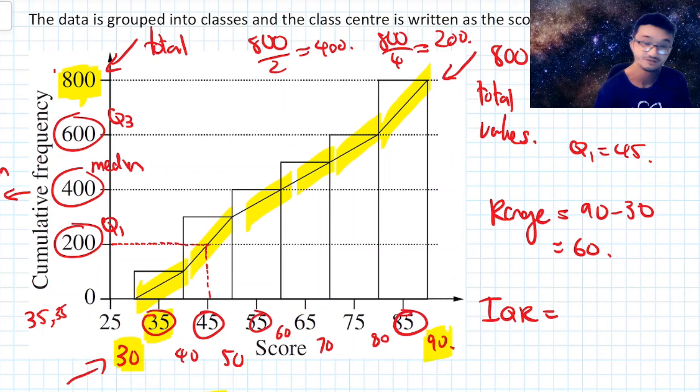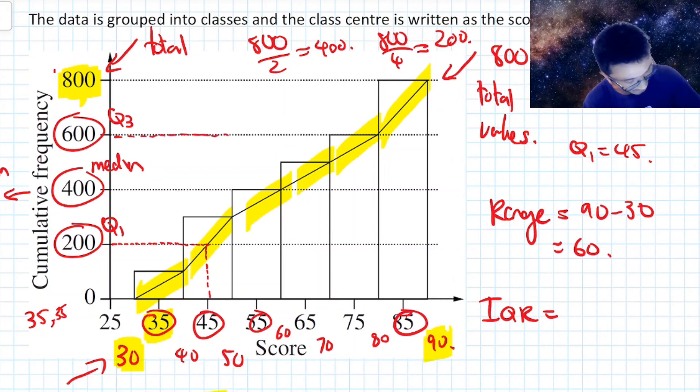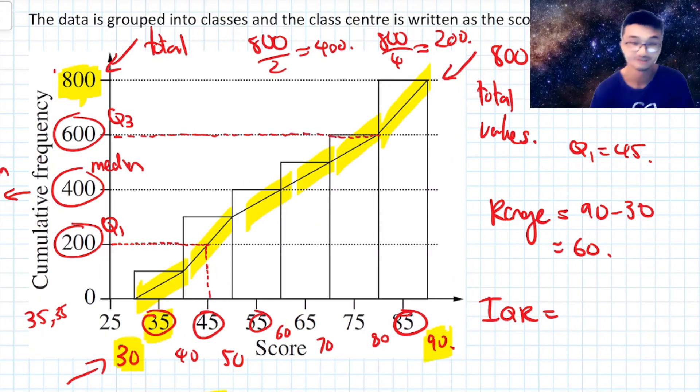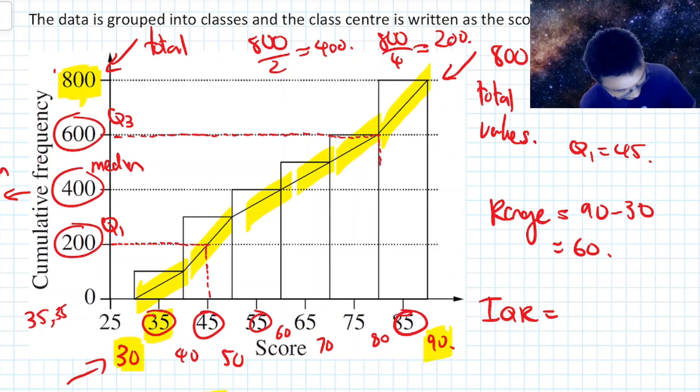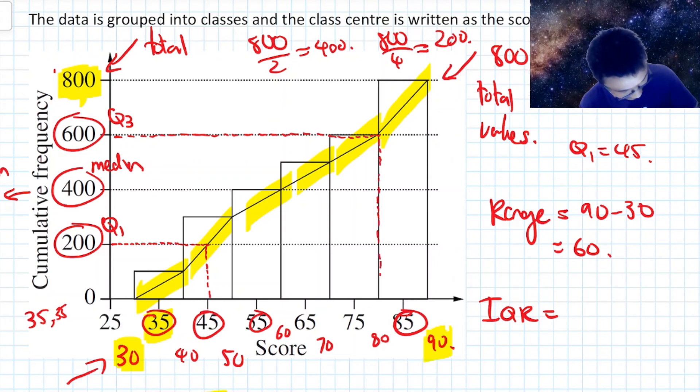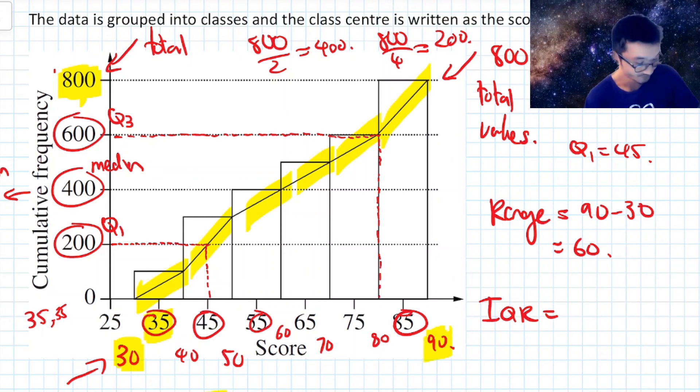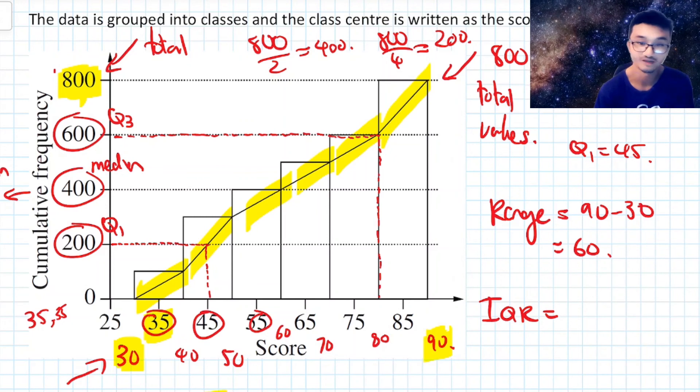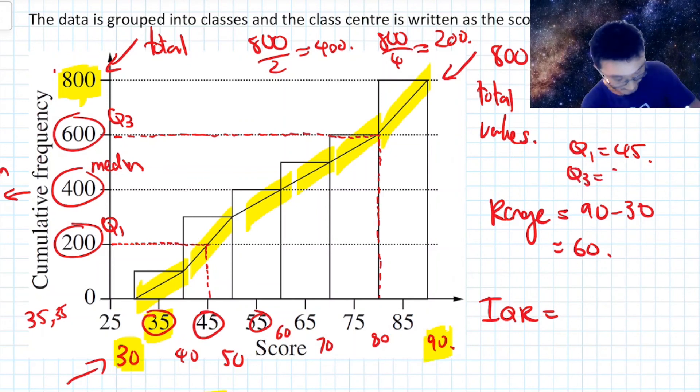And the same thing with Q3. Now, the thing to note about Q3 is when you drop the line all the way across and see where it hits this highlighted line that I've got, you'll see that it actually hits a corner here. So when it hits the corner and we drop it down, what we actually have to do is take the average of the two values that are here. And we've actually already done that. That's halfway between 75 and 85. And that's just going to be 80. All right, so Q3 is going to be 80.